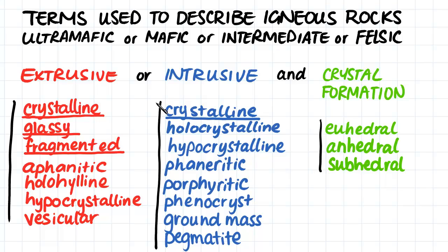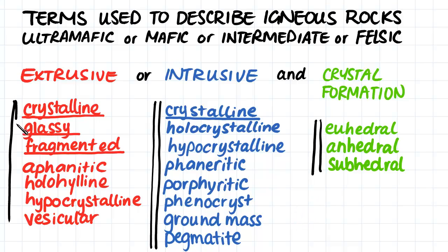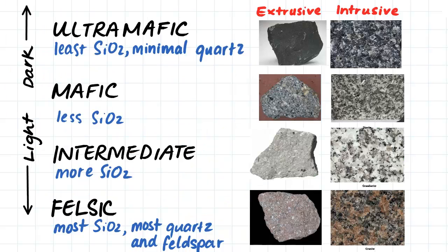In this video we will just be having a look at the intrusive terms and the terms that we use to describe crystal formation. In the next video of this two-part series we will look at the terms used to describe extrusive igneous rock. So firstly, we classify the rock as ultramafic, mafic, intermediate or felsic. Ultramafic rock has less silicon, which...